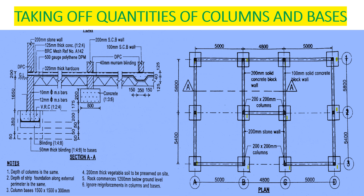In section A-A, we have our base here — it's a 50-millimeter thick blinding, mix 1:4:8, for two bases. Then we have blinding for the strip foundation, but we are not interested in that one. Our column size is 1500 by 1500 by 300 millimeters. We have the column going up to the slab. We want to find the quantity of concrete in the columns, so let's proceed.